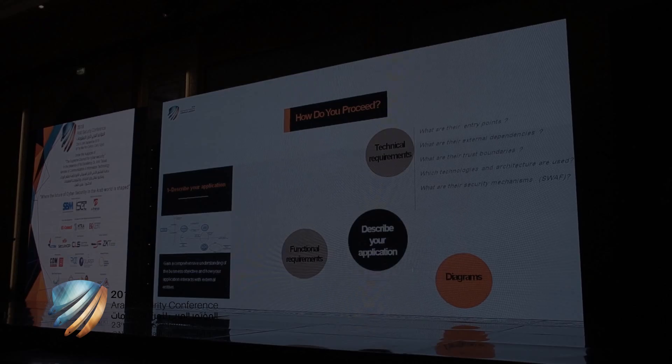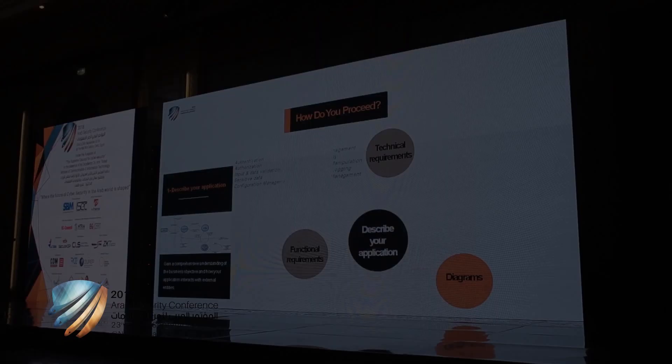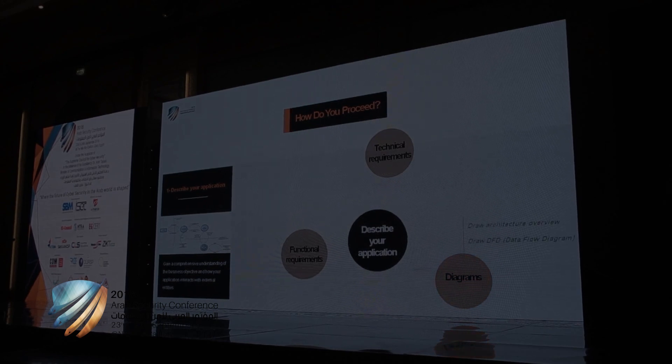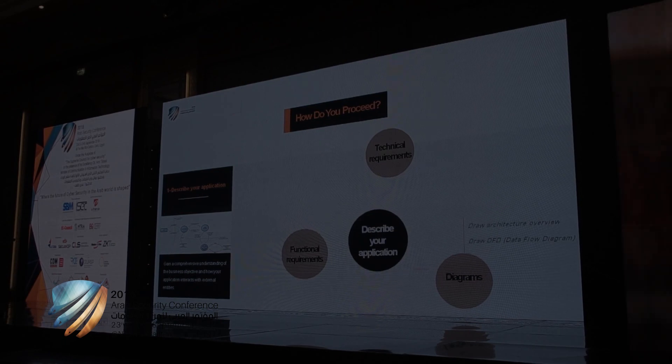It's important to figure out the technologies and architecture used to build the application. You should also know the current security controls of the application. Here you can use the Web Application Security Frame, which is a set of vulnerability categories for web applications — it will help you to categorize the current security controls by areas. After collecting the necessary information, represent it graphically in data flow diagrams to show how data moves between different processes and components. Start first with an overview of the system, then move into details for each component.